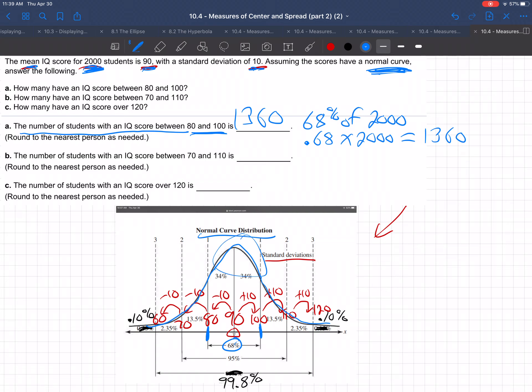It's humped in the middle with most people being around the middle. So next question, how many would have between 70 and 110? There's 70, and there's 110, so that's going to be from here to here. That's 95%.